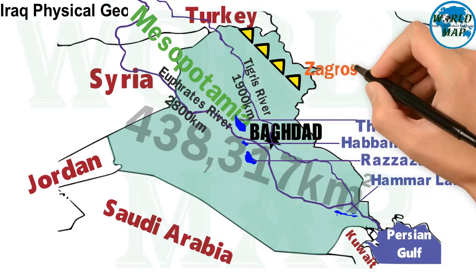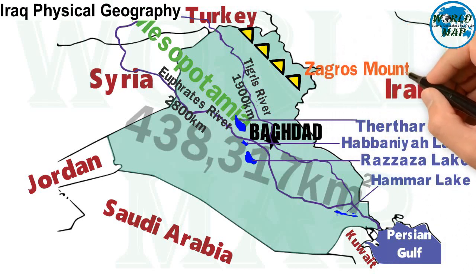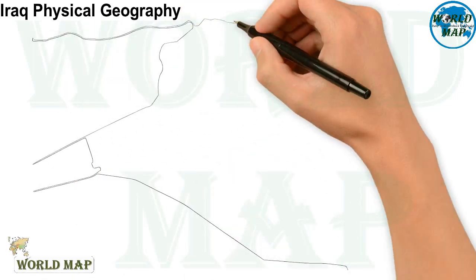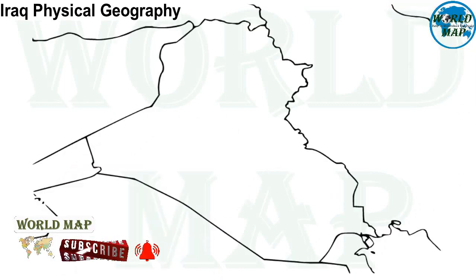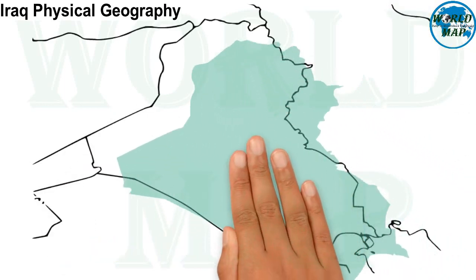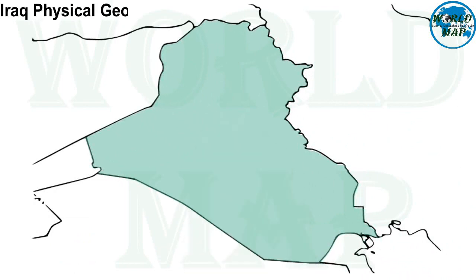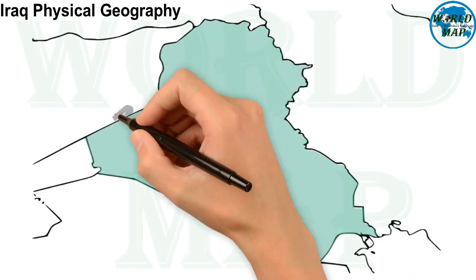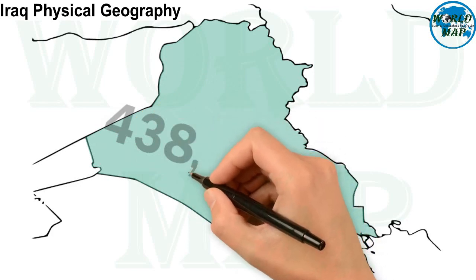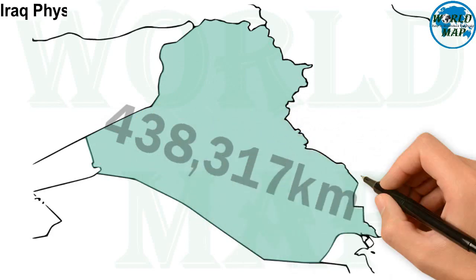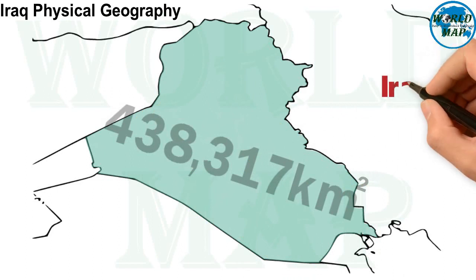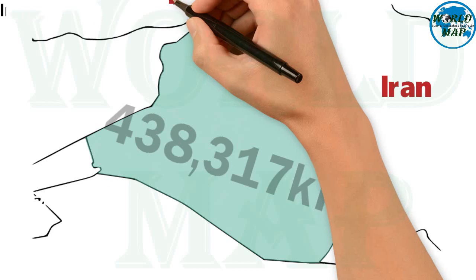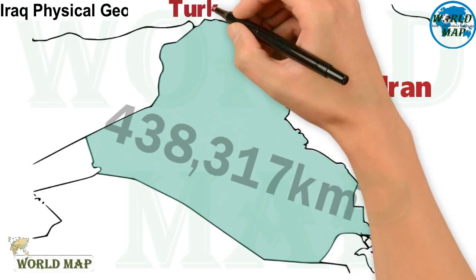Physical geography of Iraq. Iraq is a country in Western Asia with a total area of 438,317 square kilometers.